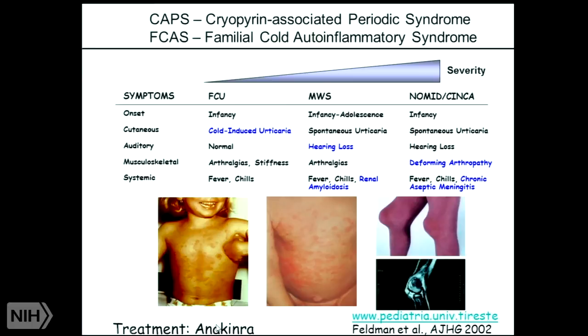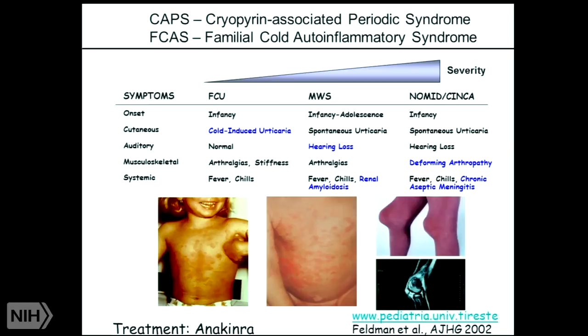One of the triumphs of the field is that they found IL-1 is increased in these patients, and you can treat them with an IL-1 receptor antagonist called Anakinra. Within a day, they all got better. That's a remarkable triumph of what these groups have done, including of course the giants of the field at NIH.